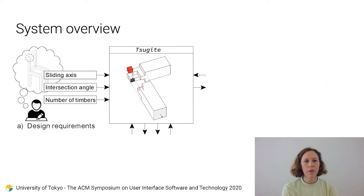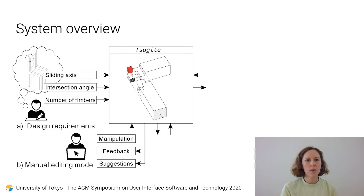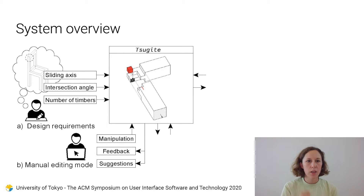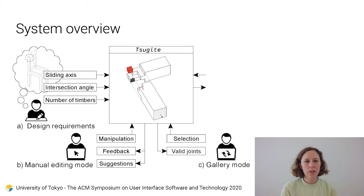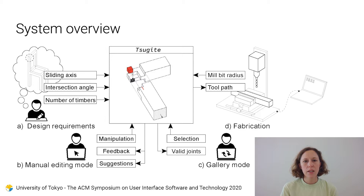In summary, the user sets certain design requirements, then the user can edit the joint manually by pushing and pulling on the faces while receiving real-time feedback and suggestions. Alternatively, the user selects a valid joint in the gallery mode. Finally, the joint is exported for fabrication.